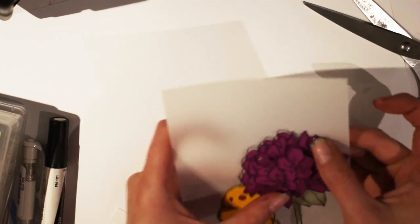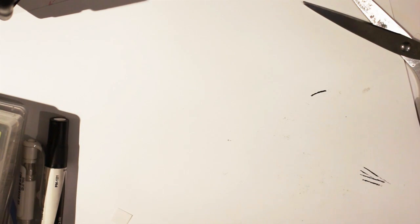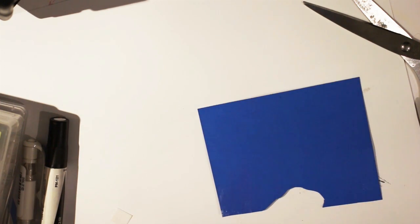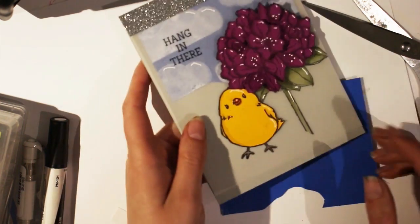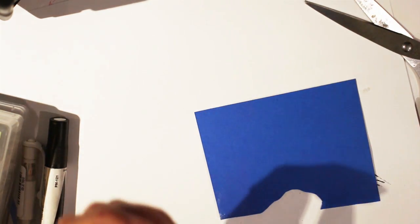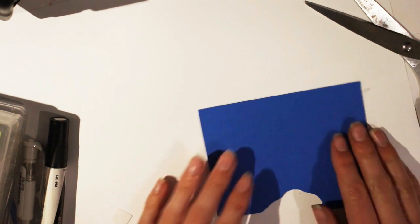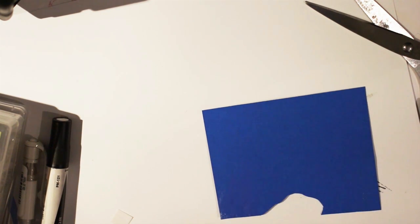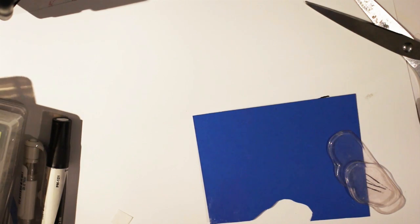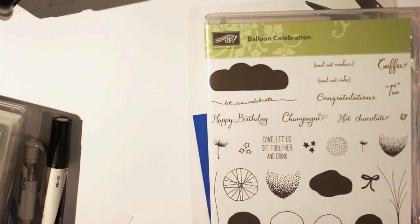So, done with the vellum for now. I'm going to put that aside. Next, I'm going to make the cloud part and you can kind of see it through the vellum there. That's going to be behind the vellum. So I'm going to grab my cloud stamps. And these are from, what are these from? Balloon Celebration. Also from Stamping Up.